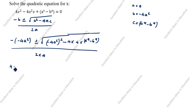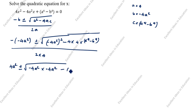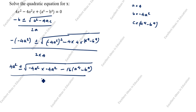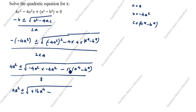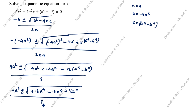This gives: 4a² ± √[(-4a²)² - 16(a⁴ - b⁴)] divided by 8. Now (-4a²)² = 16a⁴. Inside the root: 16a⁴ - 16a⁴ + 16b⁴. The 16a⁴ terms cancel, leaving √(16b⁴) divided by 8.